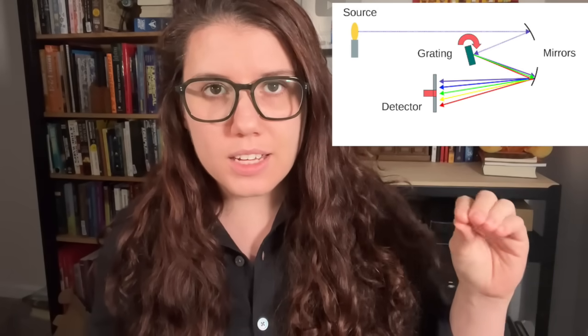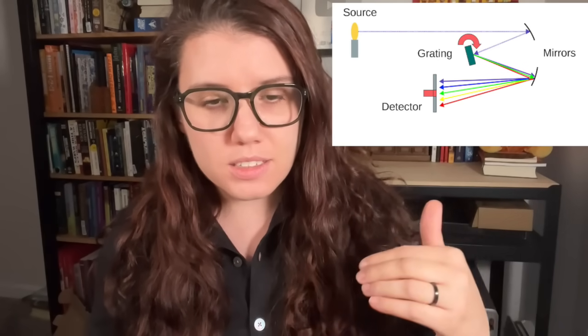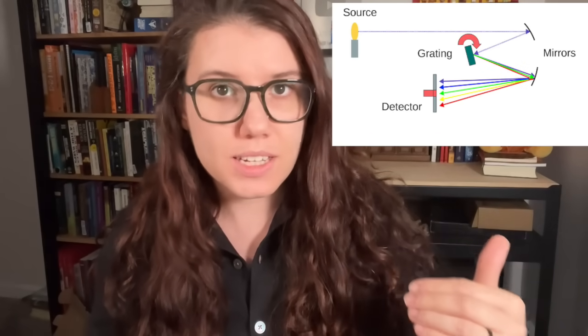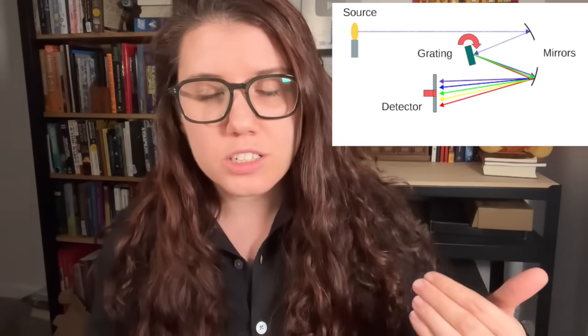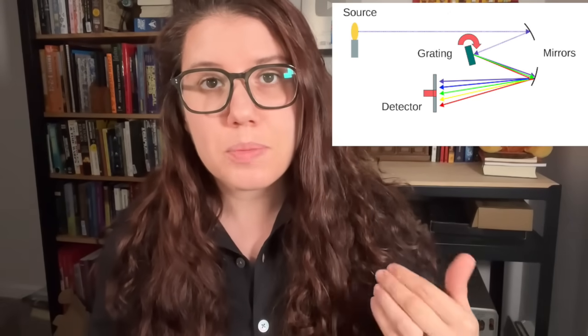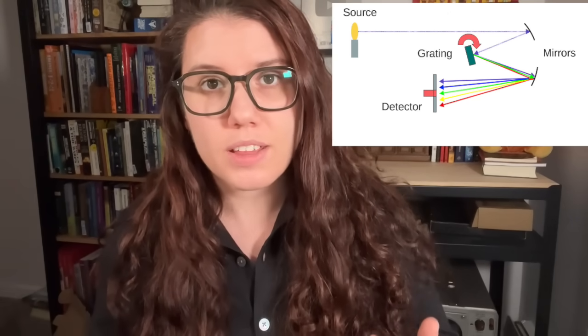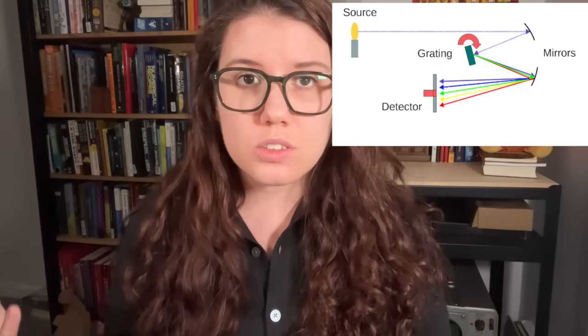It looks something like this. You might be more familiar with a diagram that looks like this. So you have some sort of white light, it hits a grating, and because of the way photons work, when a photon hits a material, the angle with which it is refracted is dependent on the wavelength.